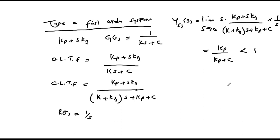Therefore the proportional plus derivative control action will not be a suitable controller for a type 0 first order system. It is also good to notice that when we have a proportional plus derivative control action, there is going to be the introduction of a zero at s = -kp/kd.